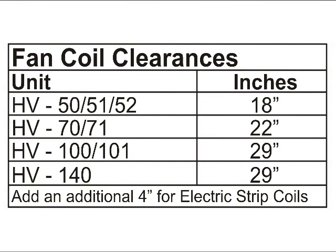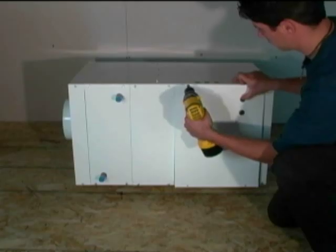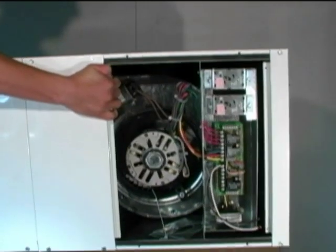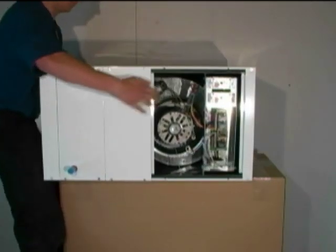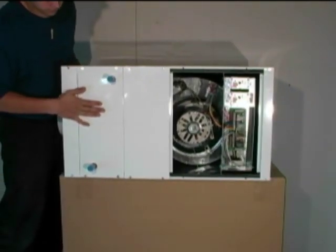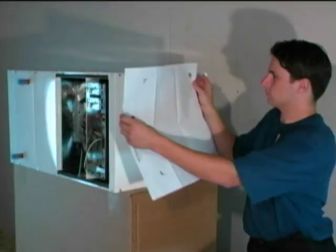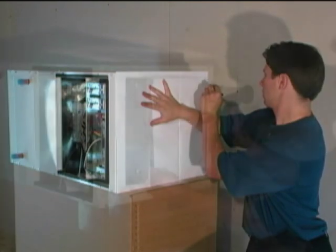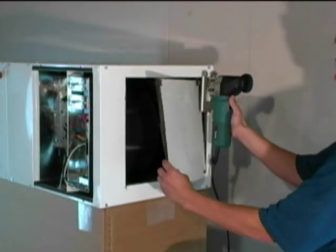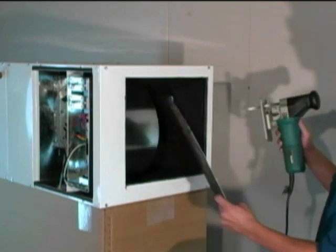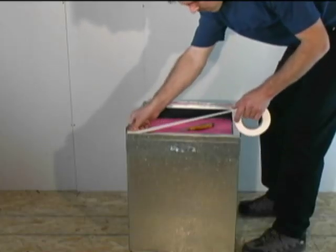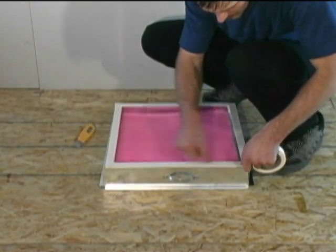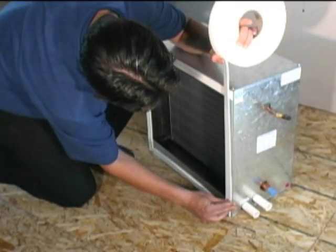Refer to the installation guide for clearances on the model being installed. For easier maneuvering, remove the front access panel. Because the unit is designed for various installation positions, it's necessary to cut a hole in the unit before attaching the return air. Locate the top of the unit, and then use the provided return air template to mark the return air opening. Cut the hole, being careful to cut completely through the sound-absorbing lining. Depending on the configuration of the unit, apply double-sided isolation tape to the return air base, filter rack, or cooling coil to create an airtight seal.